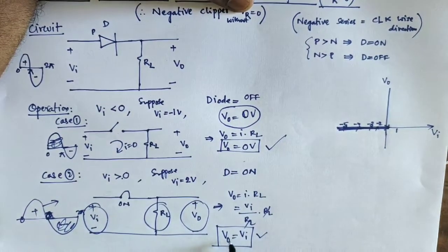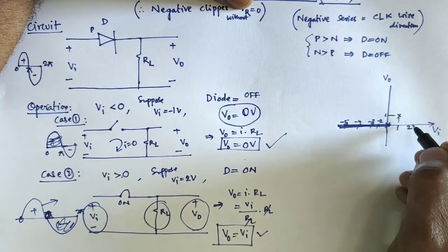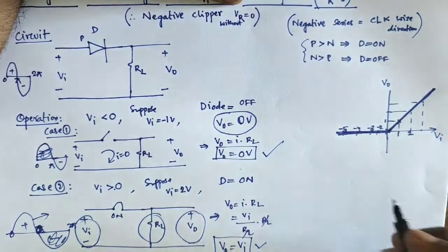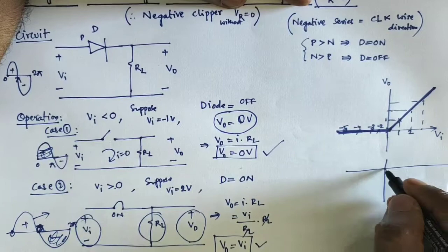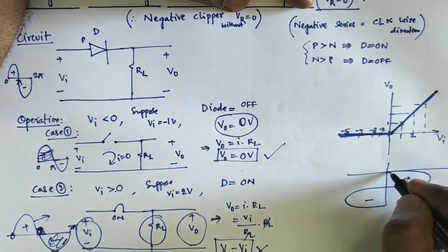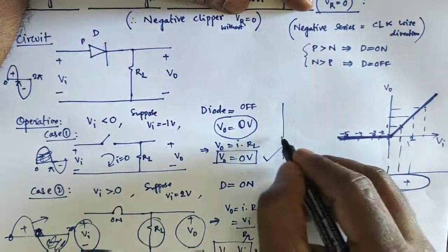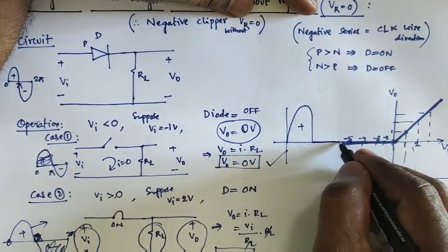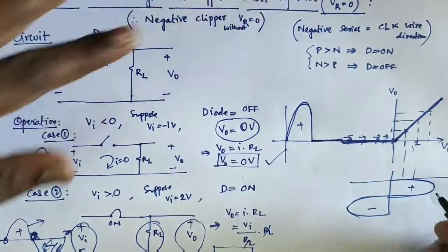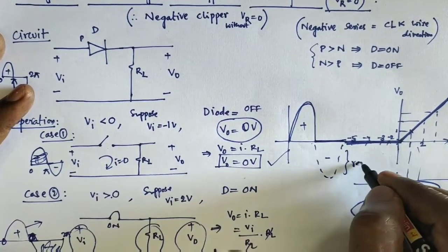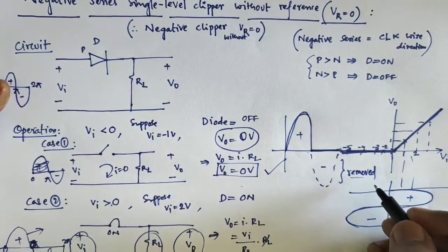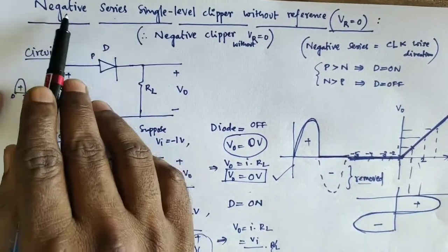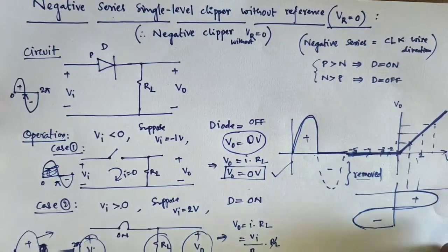When VA is greater than 0 — applying input 1, output is 1; input 2, output is 2; input 3, output is 3 — we get a slope. Based on this transfer function, we design the output waveform. Applying a positive and negative sinusoidal input: all positive values are reflected on the slope, so at the output stage you get the positive half. All negative values are not reflected — you get 0. The negative part is removed at the output, which is the clipper definition: removing part of the signal. This confirms the negative series clipper with reference value 0.